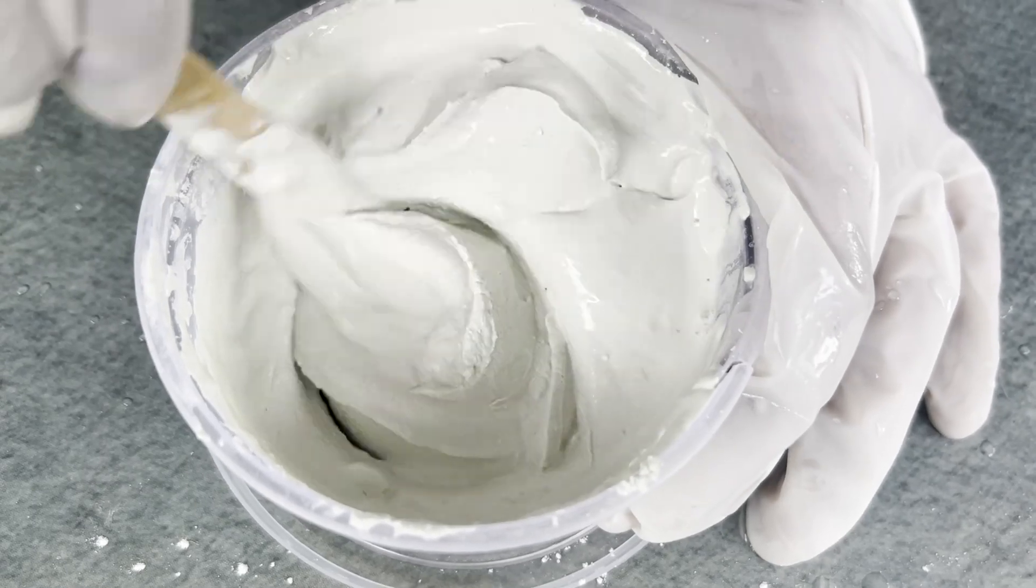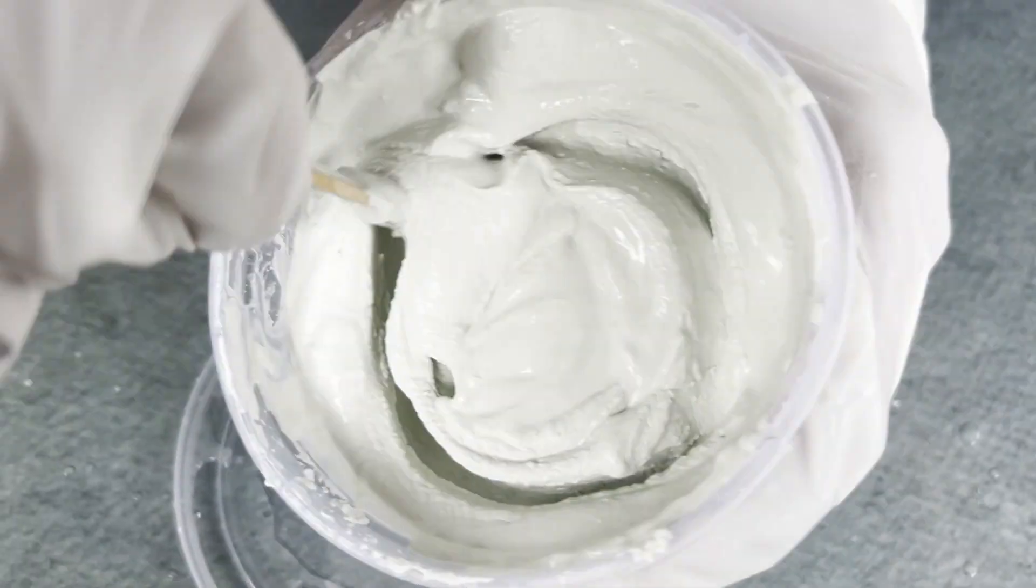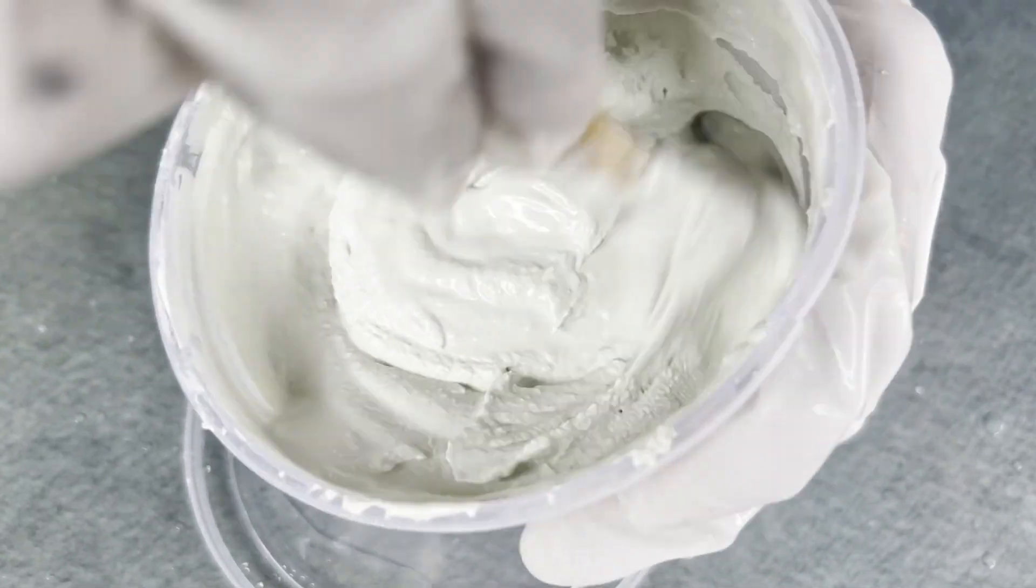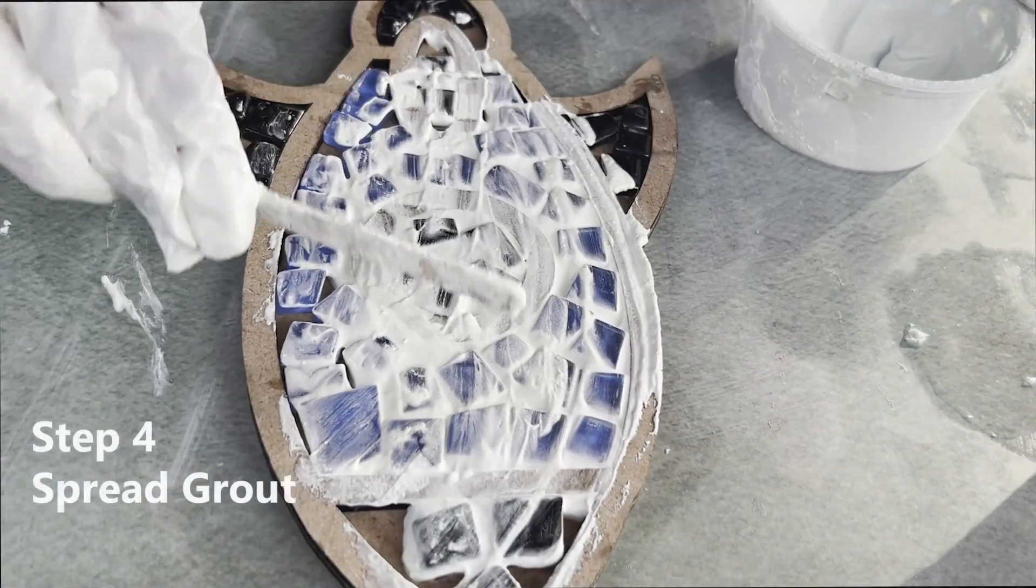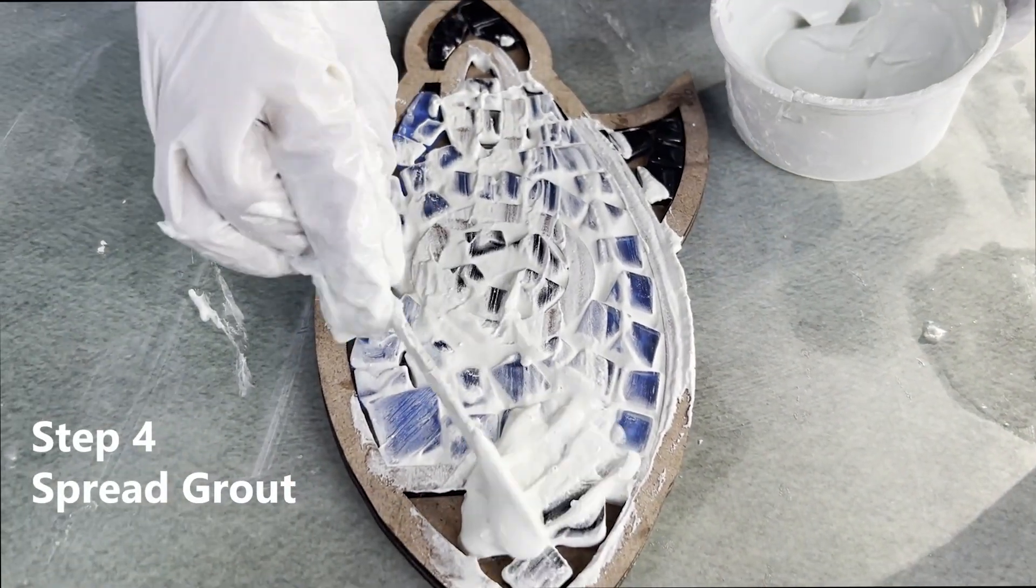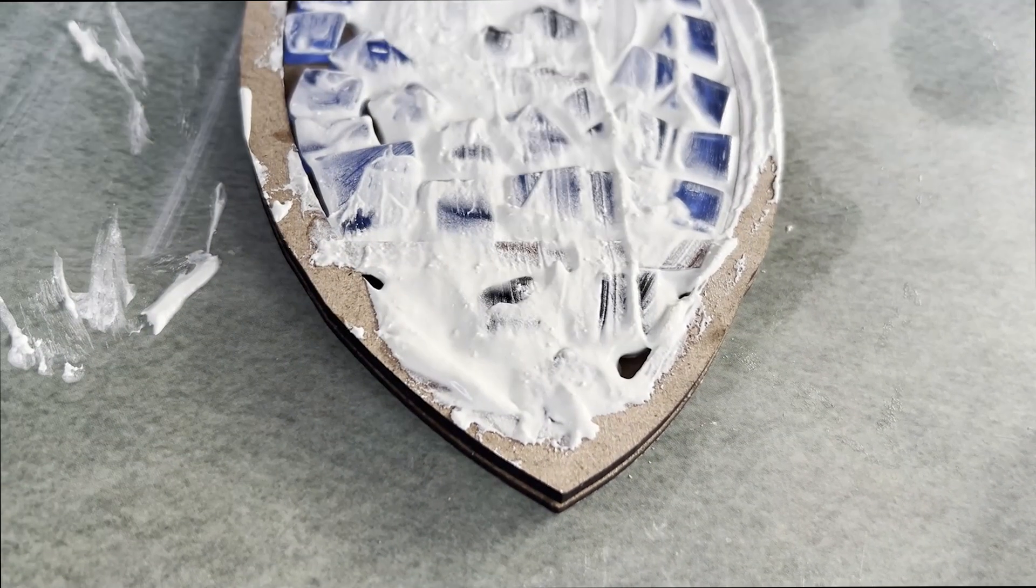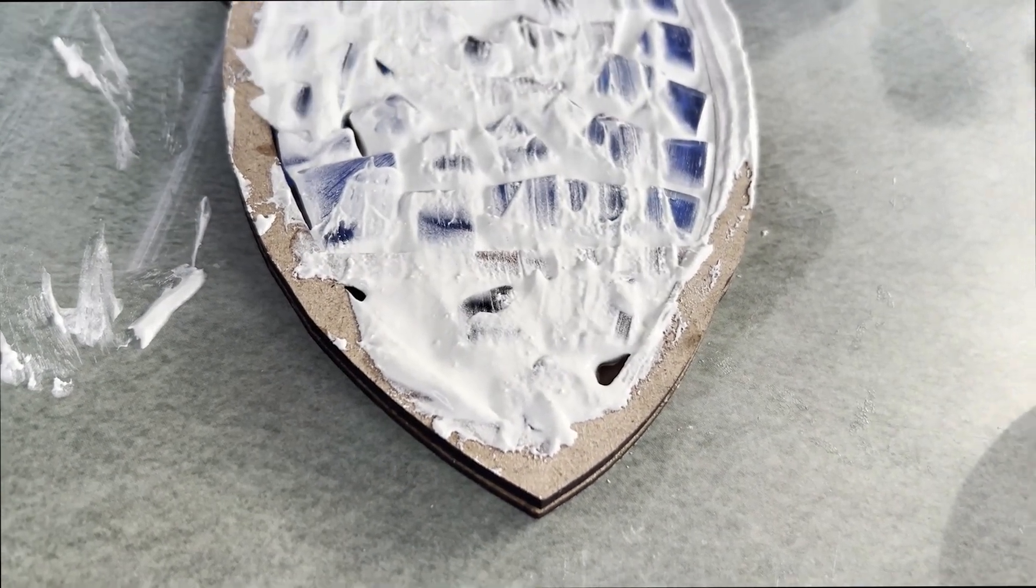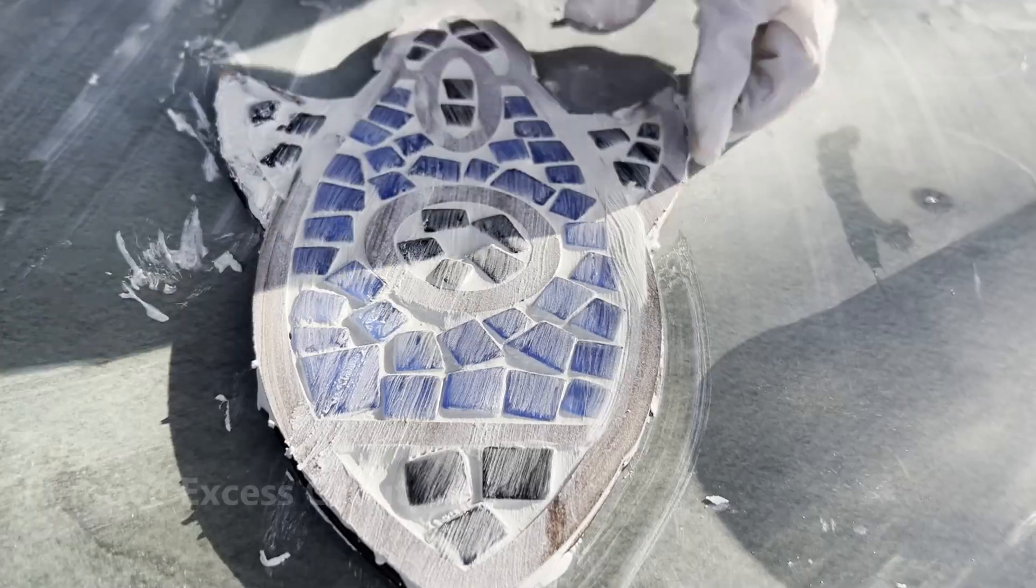Apply the grout over the mosaic tiles, ensuring it gets into all the gaps between the tiles. Use the applicator to spread the grout evenly. Wet the sponge with water and wipe away the excess grout from the surface of the tiles.